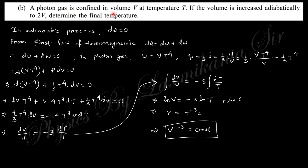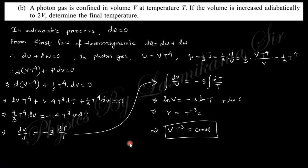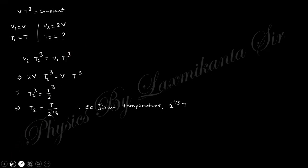Next part of question six: a photon gas confined in volume V at temperature T undergoes adiabatic expansion to volume 2V. Find the new temperature. In an adiabatic process dQ = 0, so from the first law dU + dW = 0. For a photon gas, U ∝ VT⁴ and P = U/(3V). Substituting and integrating yields the relation VT³ = constant. Using initial state (V, T) and final state (2V, T_f), the final temperature is T_f = T·(1/2)^(1/3).